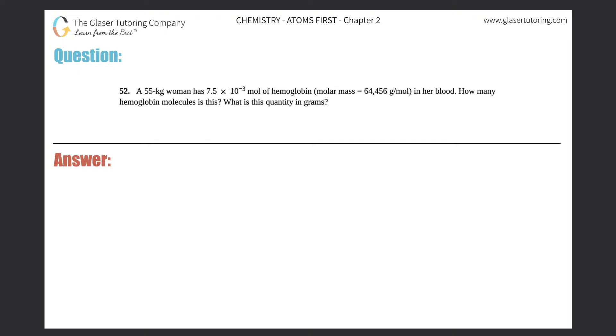Number 52. A 55 kilogram woman has 7.5 times 10 to the negative 3 moles of hemoglobin, which has a molar mass of 64,456 grams per mole in her blood. How many hemoglobin molecules is this? And then what is this quantity in grams?